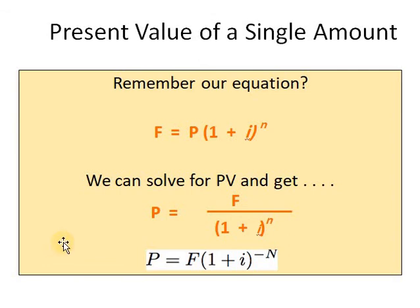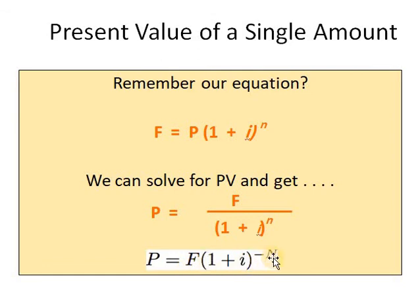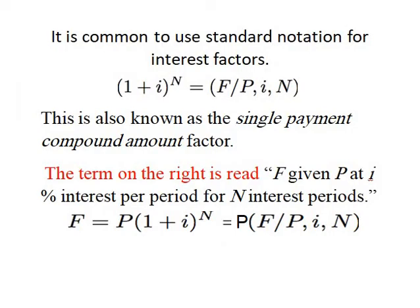What if I want to get the present value of a future amount? Using the same equation F equals P(1+i)^n, we rearrange to get P equals F divided by (1+i)^n, which is the same as P equals F times (1+i)^(−n). This is the equation we use to get the present value of a single amount.